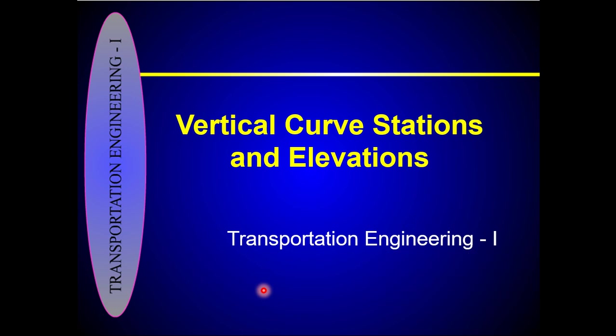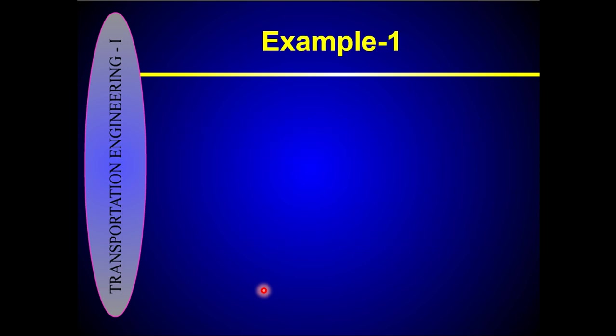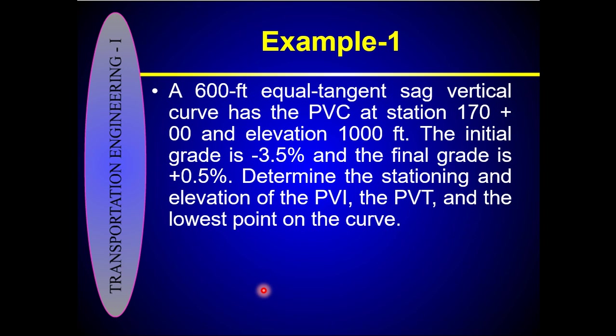Bismillahirrahmanirrahim. My name is Engineer Vakas Haroon. In this video I will tell you how to calculate the stations and elevations of a vertical curve. This example has been taken from the book 'Principles of Highway Engineering and Traffic Analysis' by Fred L. Mannering. In this example, a 600-foot equal tangent sag vertical curve has the PVC at station 170 and elevation 1000 feet. The initial grade G1 is minus 3.5% and the final grade G2 is 0.5%.